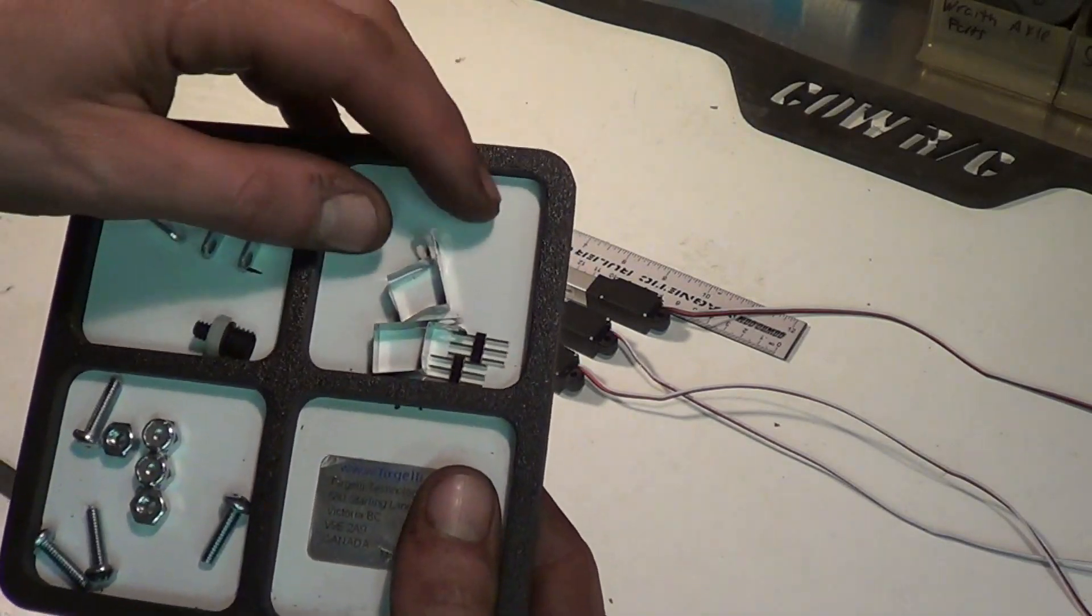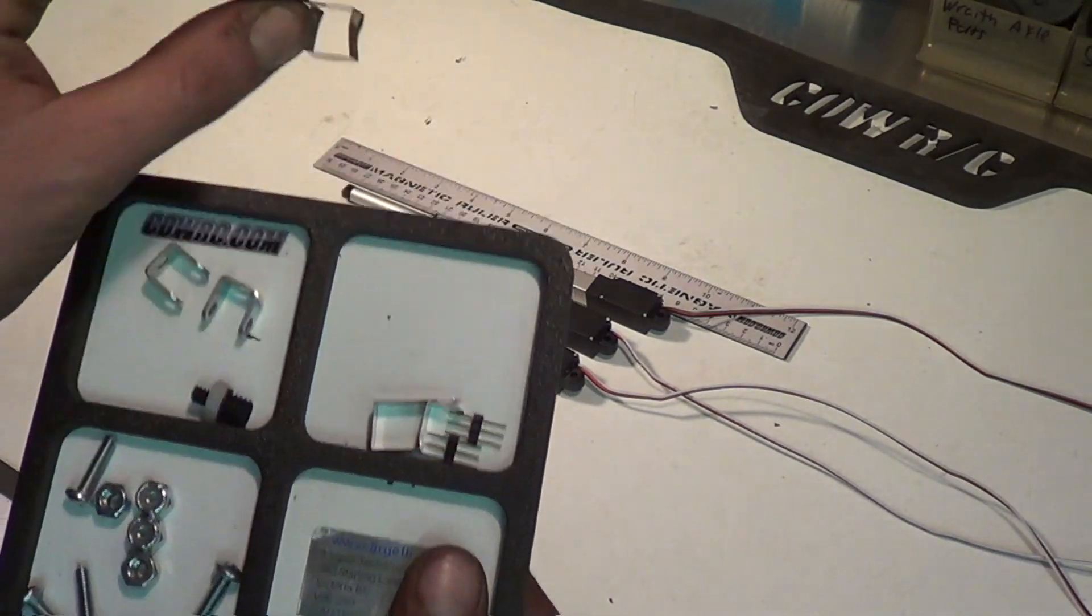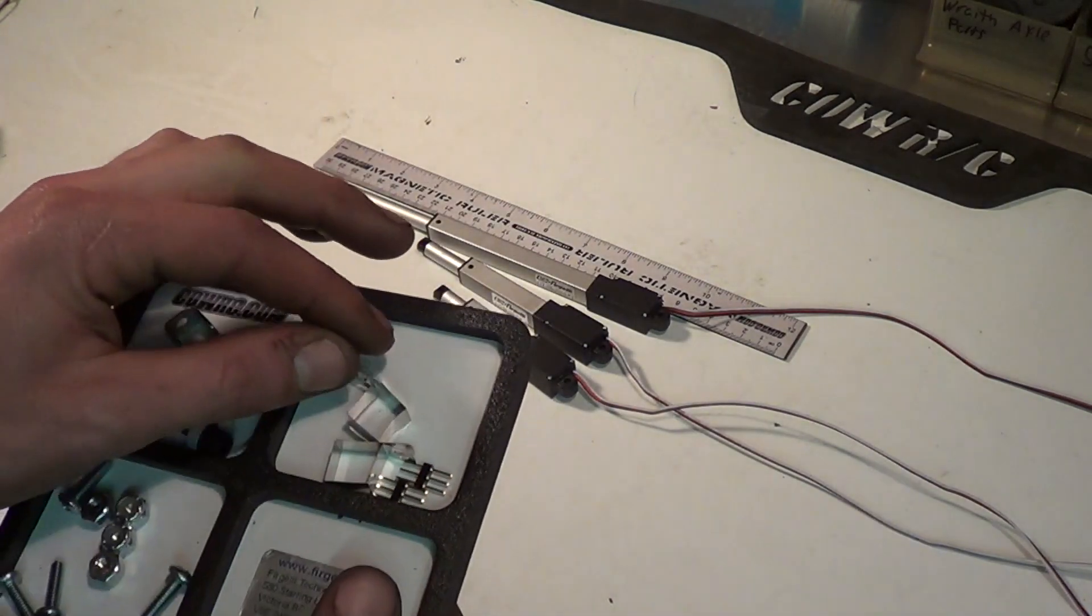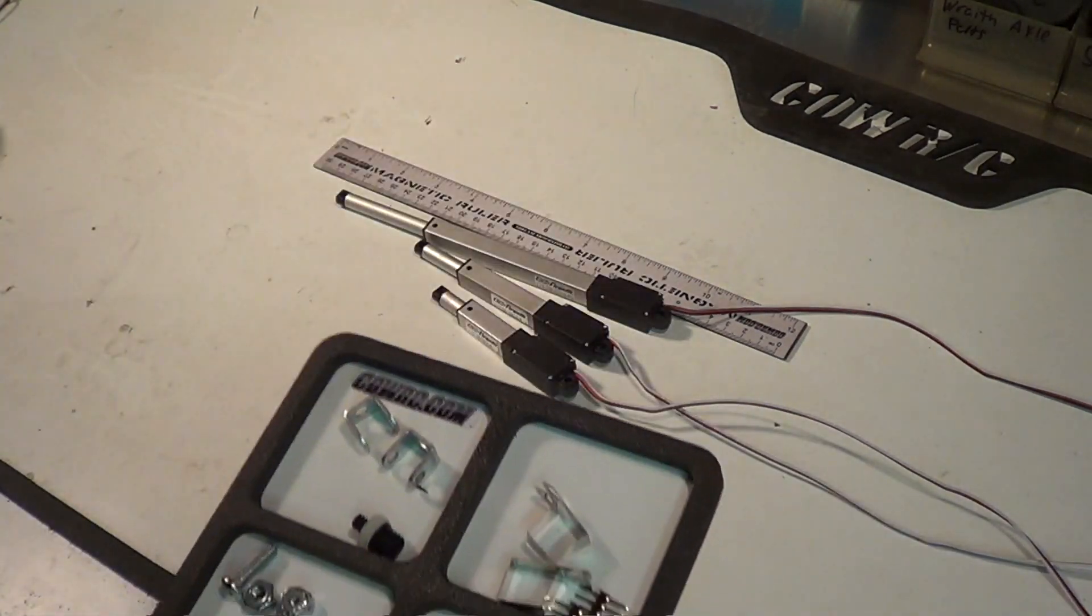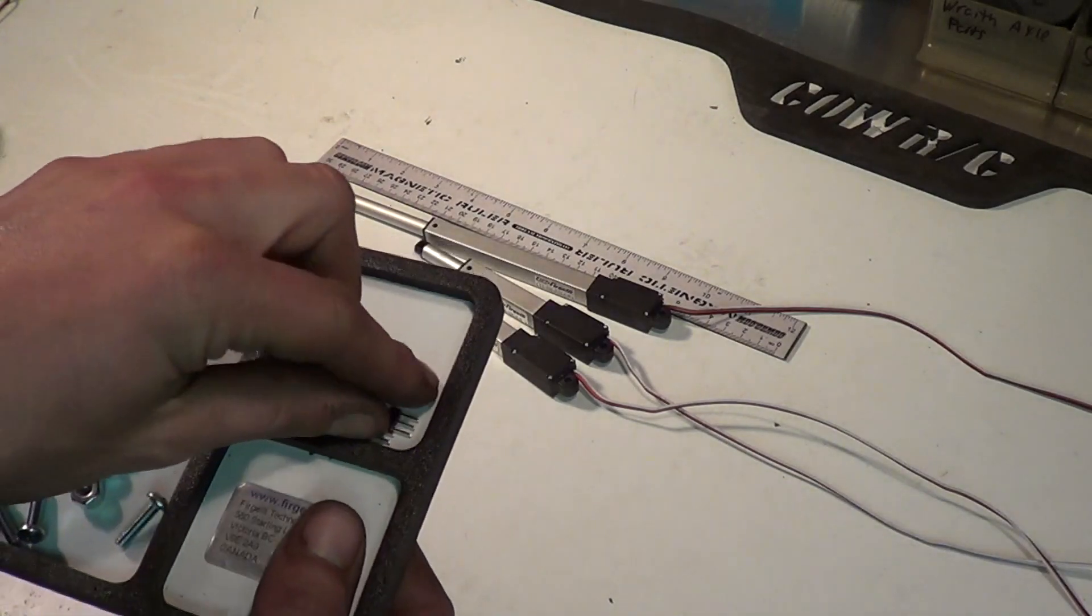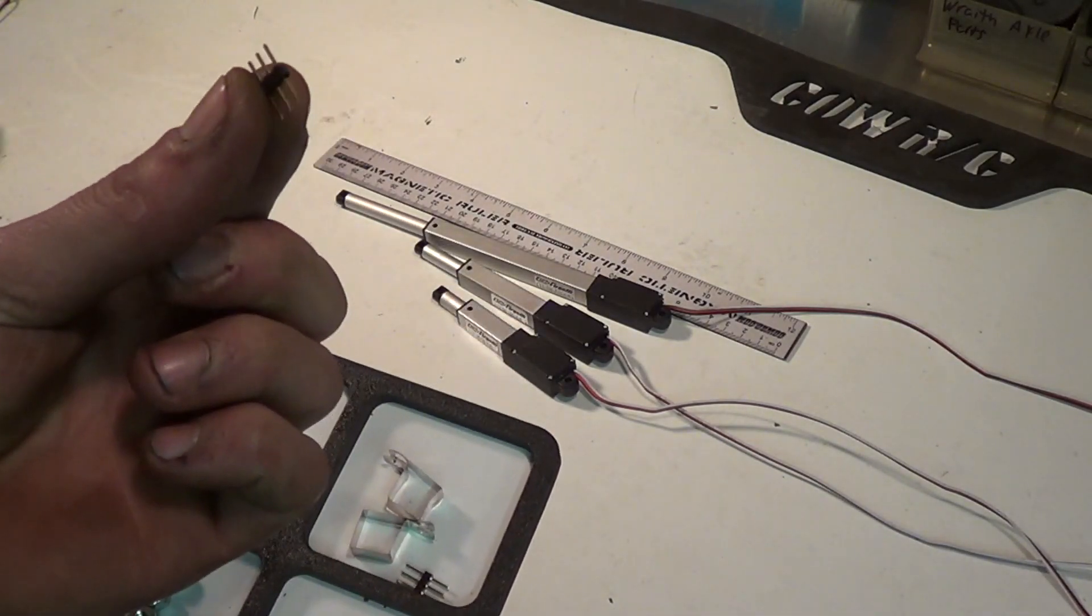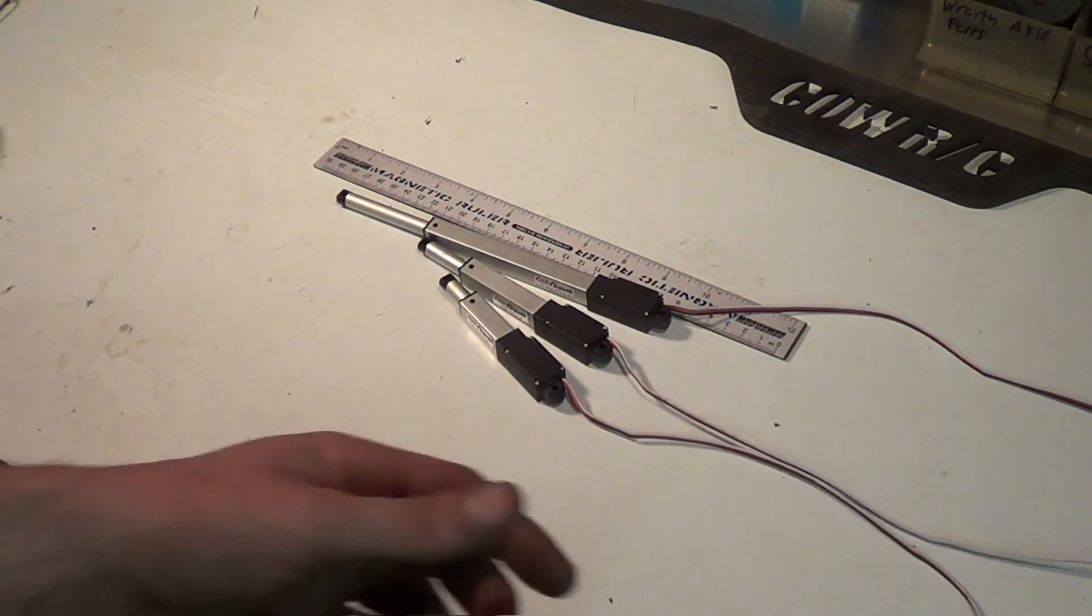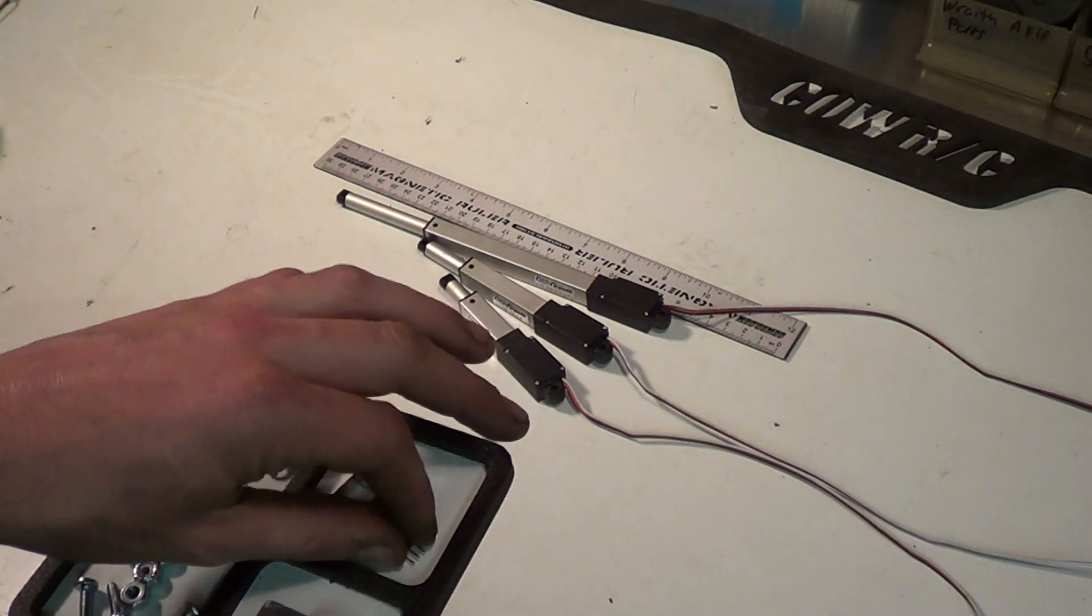They also come with these little brackets that go around the body of the actuator, so you can bolt it securely to something instead of using the hole in the end. And they also come with these little adapters for the plug on the end of the wire for different kinds of setups.